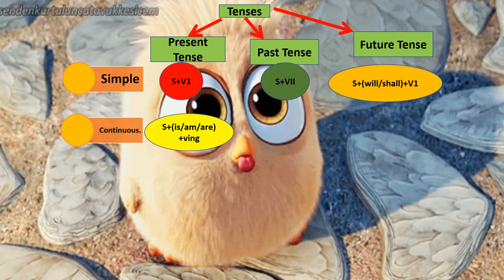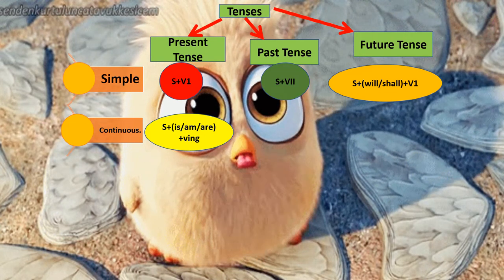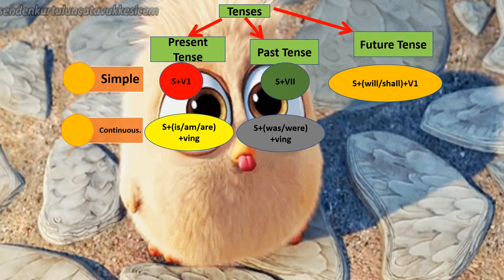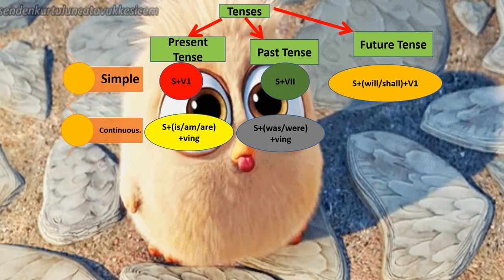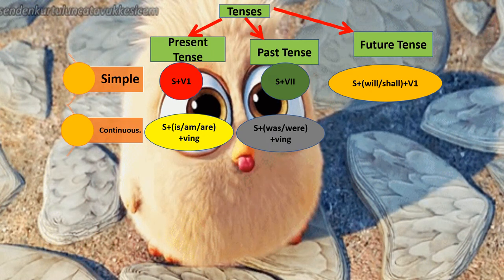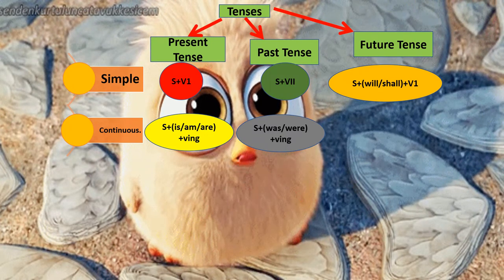Let us make the formula for past continuous tense. Subject should be there, then a verb, then ING. The verb will be was/were because it is a past tense — it cannot have is/am/are. Formula: subject + was/were + V-ING. For example: 'she was cooking' or 'they were cooking'.